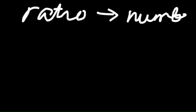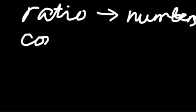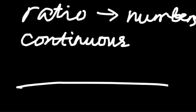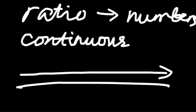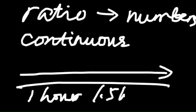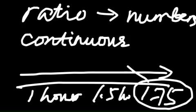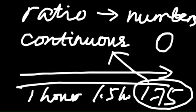The next variable is the number of hours they work per day. This can be ratio, because it is about numbers, and it is also continuous because all the numbers in between are meaningful. They can have 1 hour, 1.5 hours, or 1.75 hours. You can also have a true zero meaning — if on that day they haven't worked with these shoes, the number of hours is 0. So this 0 is a true zero, and therefore it is ratio.